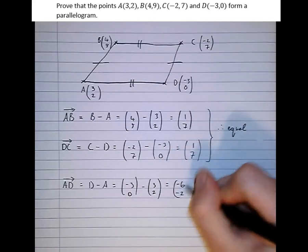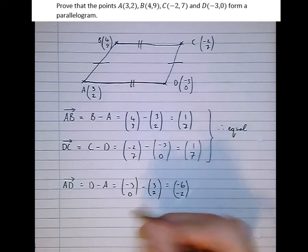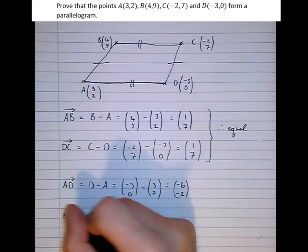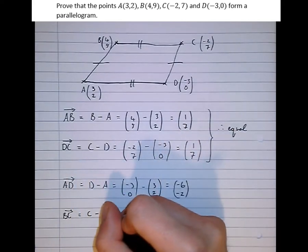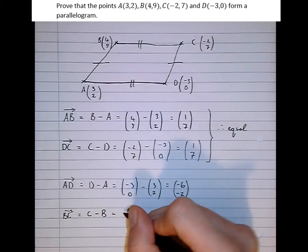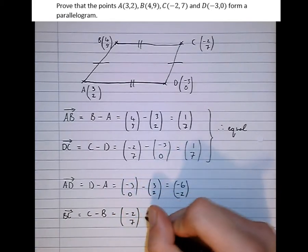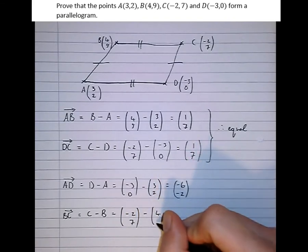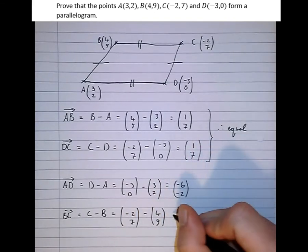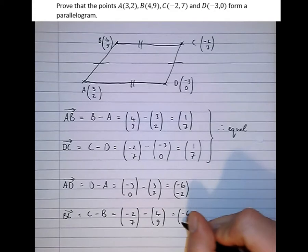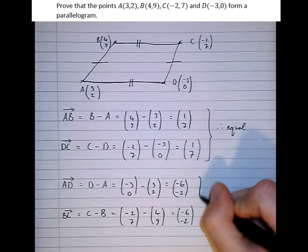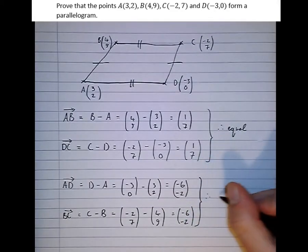BC equals C minus B, which is equal to (-2,7) minus (4,9), which indeed is (-6,-2), therefore equal.